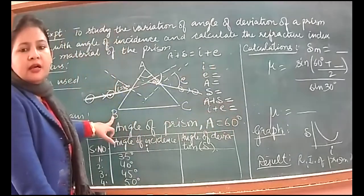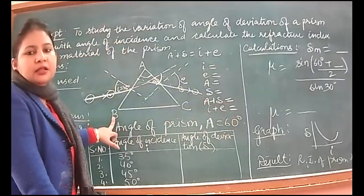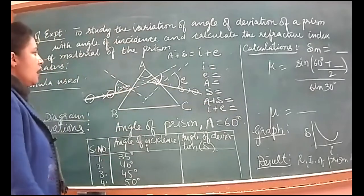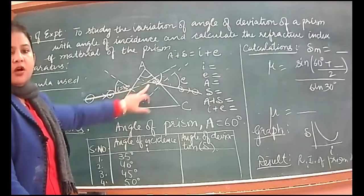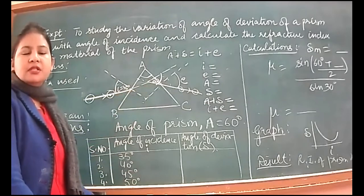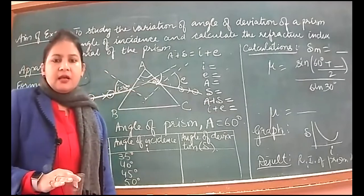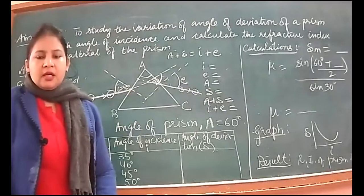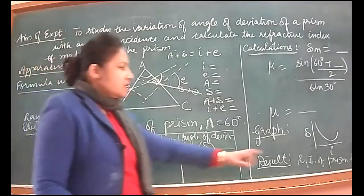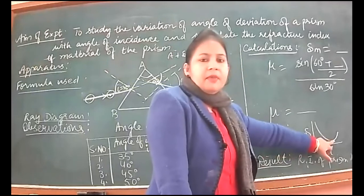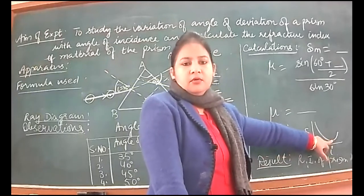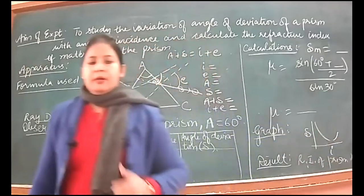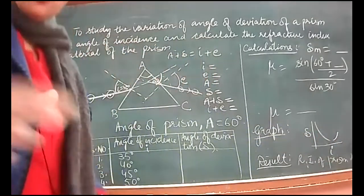So this way, for each diagram, we can write on the sheet itself. As you go on increasing angle of incidence, angle of deviation will start decreasing. Where it starts increasing again, that means the previous value was the minimum angle of deviation, delta m. I will tell you from the table.